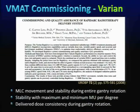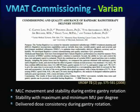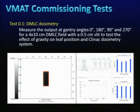For VMAT commissioning on Varian machines, a key reference paper covers MLC movement and stability during gantry rotation, including maximum and minimum MU per degree and delivery dose consistency. Test 0.1 involves DMLC dosimetry at different gantry angles using an ion chamber at the central field or using EPID or film, analyzing each gantry angle to confirm there is no dose difference.